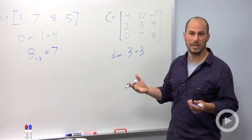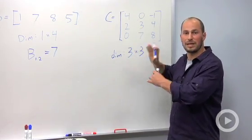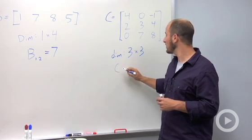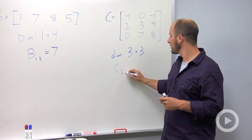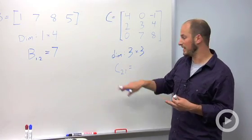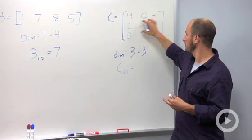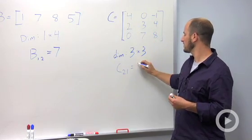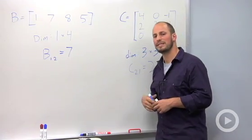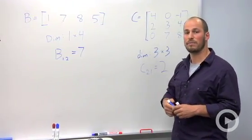And if I ask you for C, let's say two one, you're looking at the second row, first column, so this is going to be equal to two. Some very basic language so we can communicate about matrices.